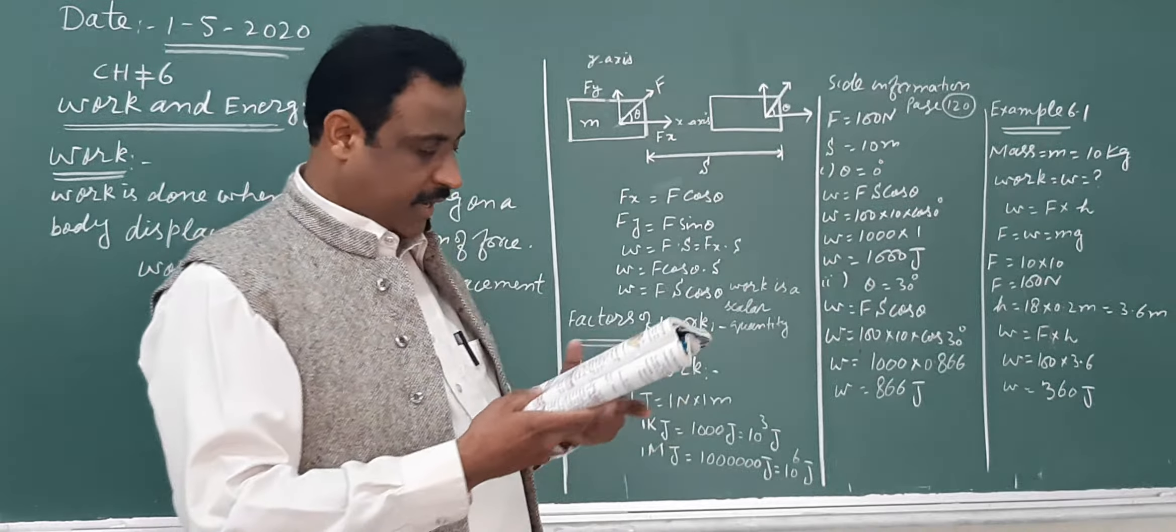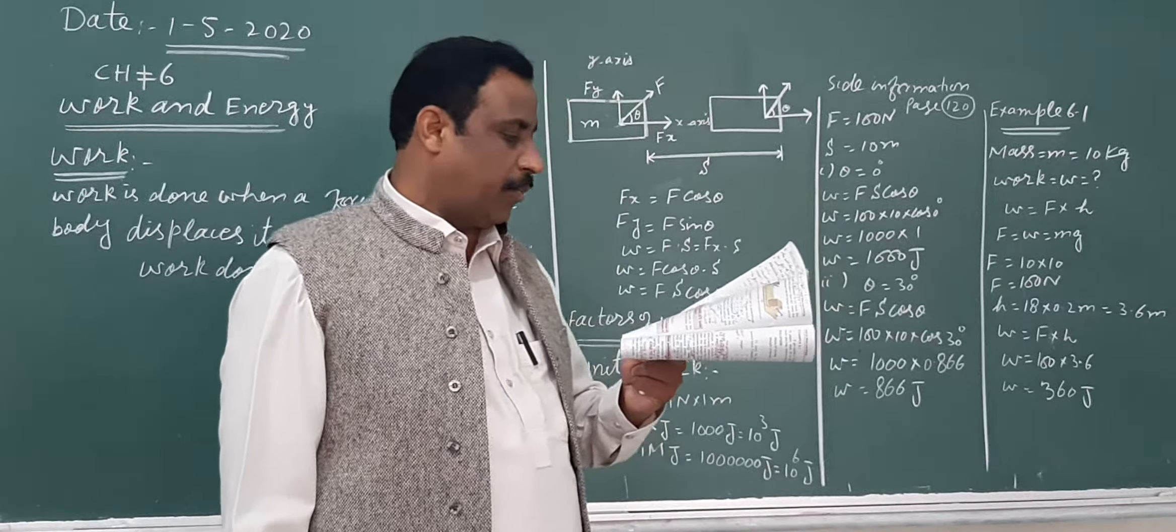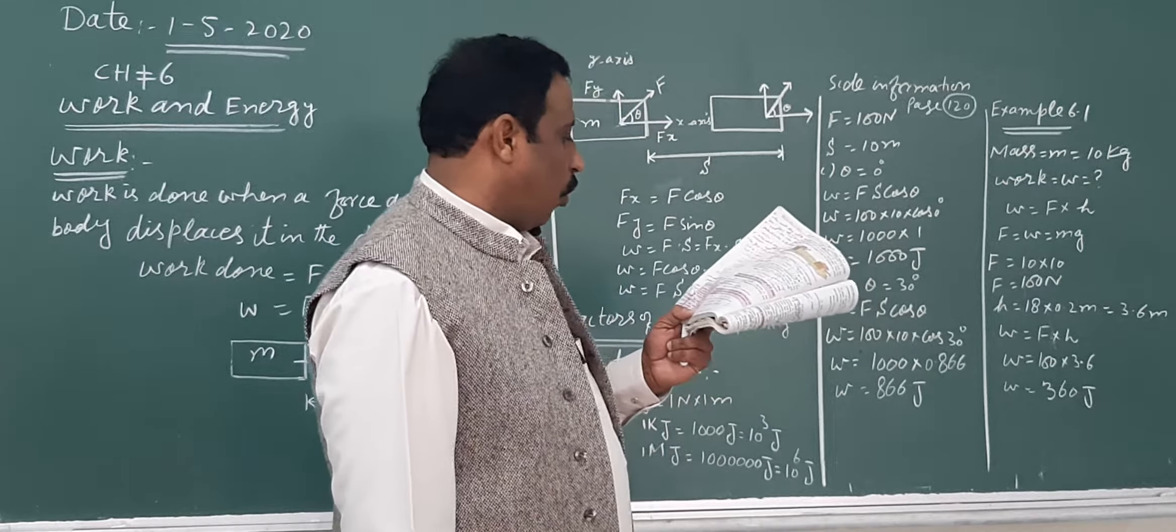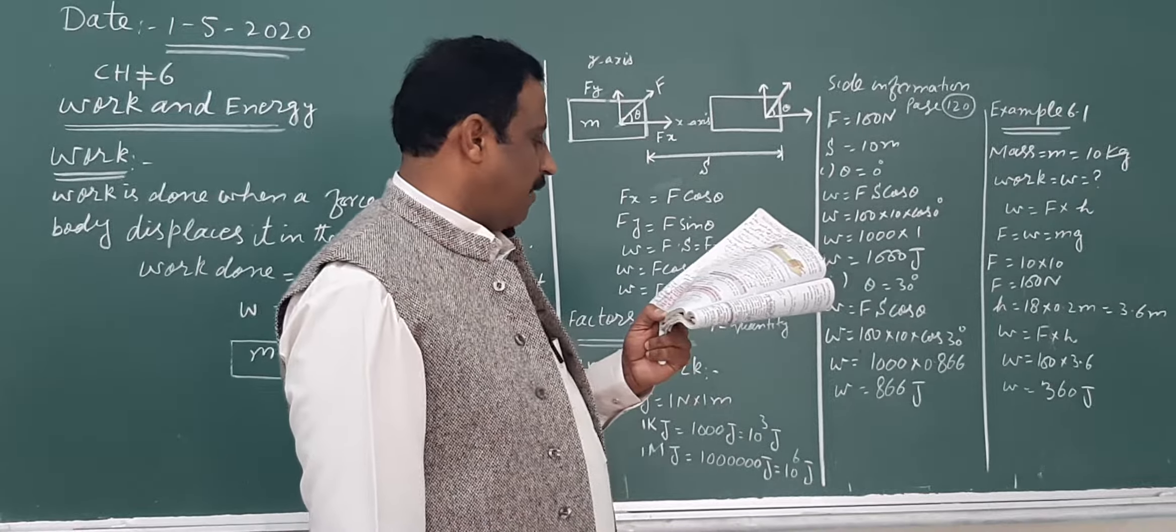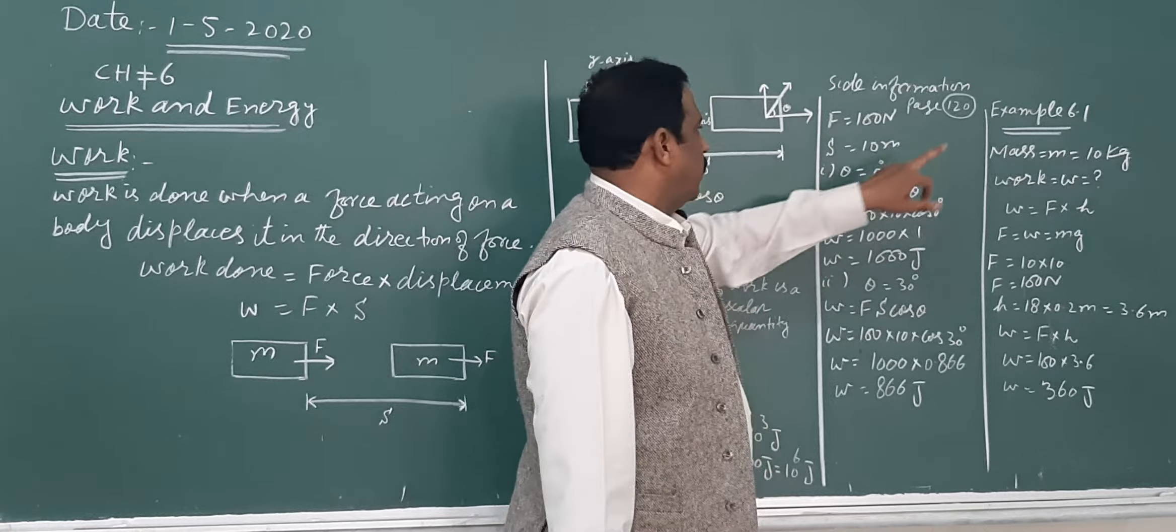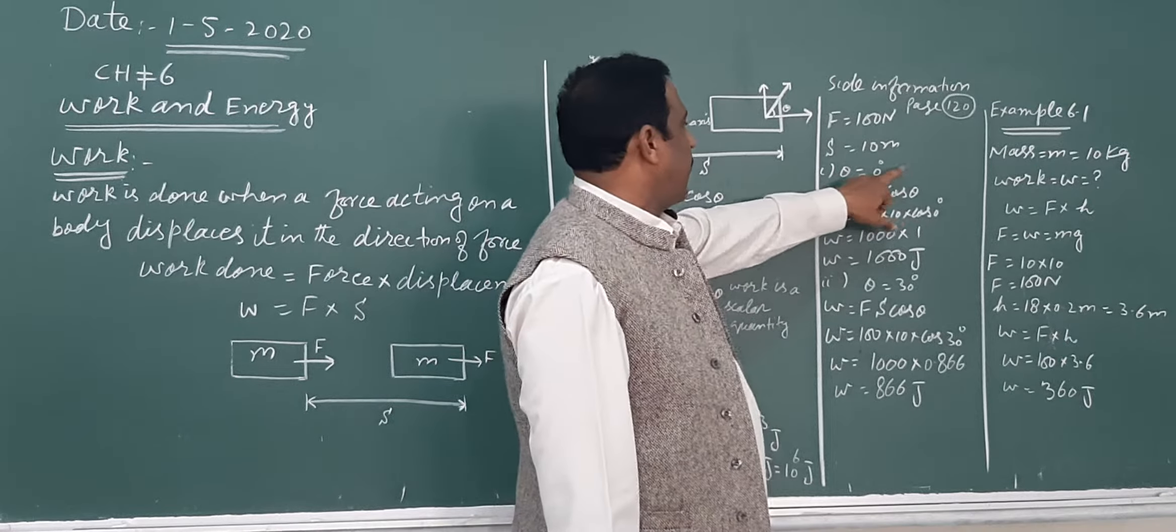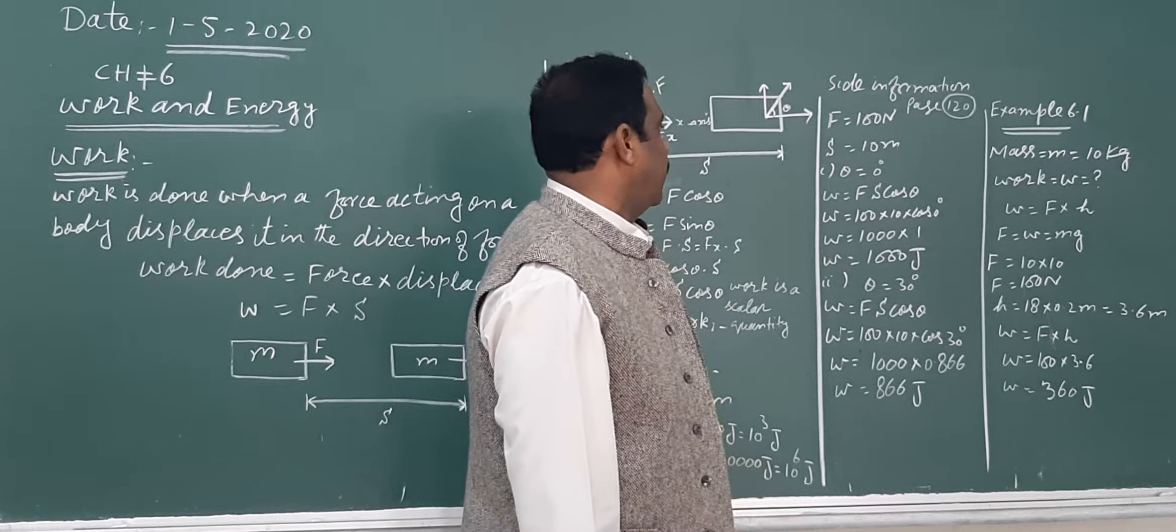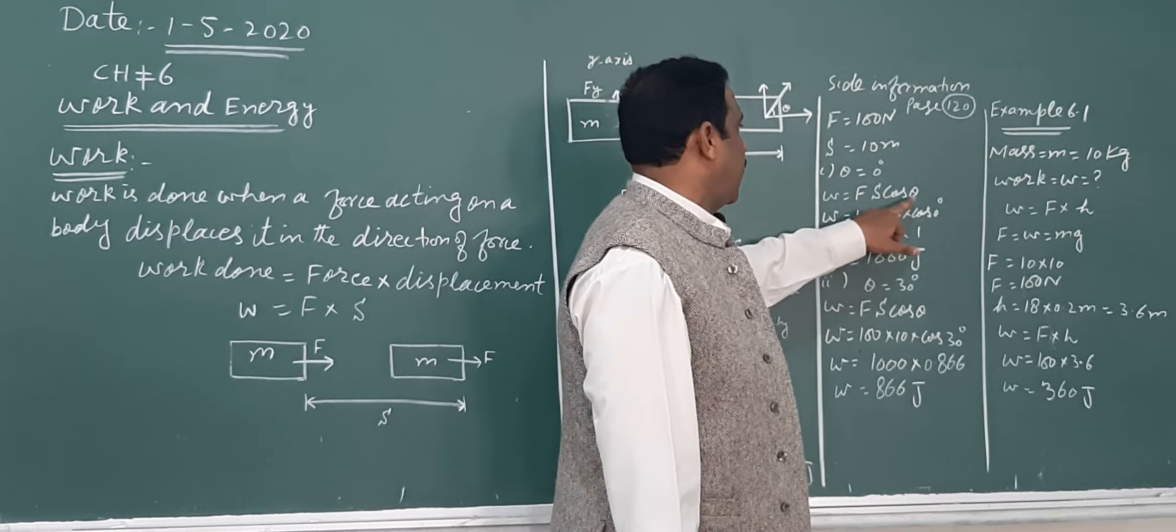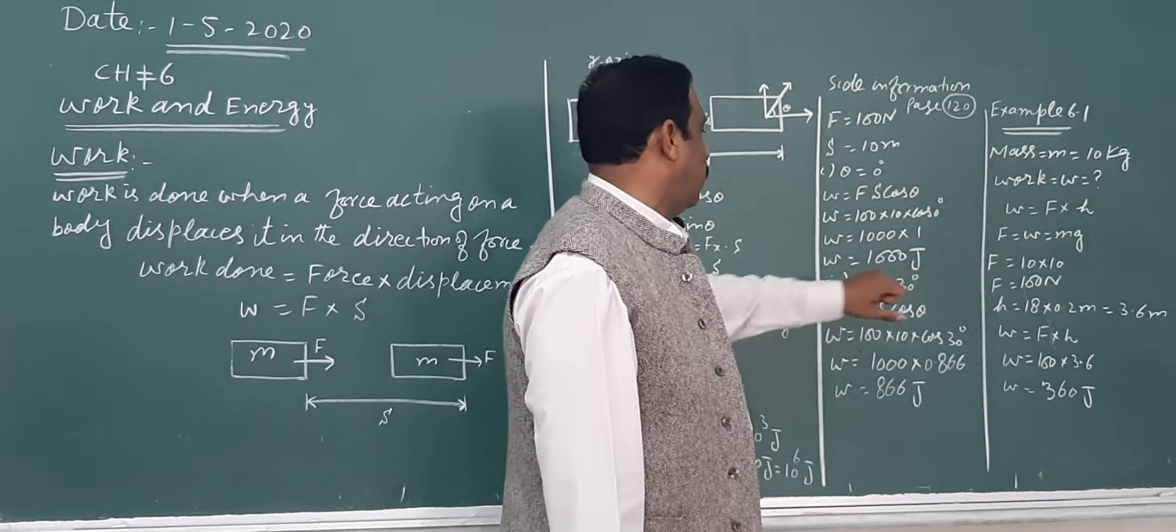Here's an example: A box is moved by pulling the rope attached to it. It moves 10 meters on a straight horizontal road by a force of 100 Newton. How much work will be done? In the first case, the rope is parallel to the road. Given: force is 100 Newton, displacement is 10 meters, theta is 0 degrees. Work done = F × S × cos(0) = 100 × 10 × 1 = 1000 joules.